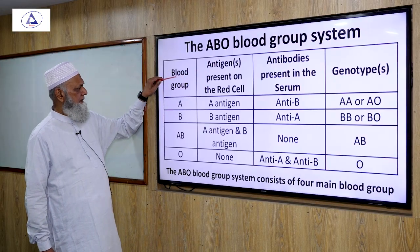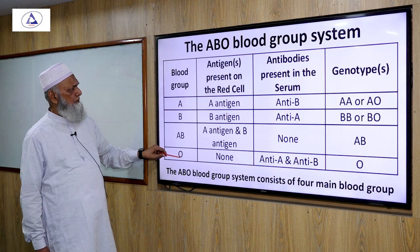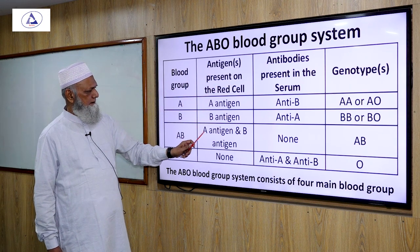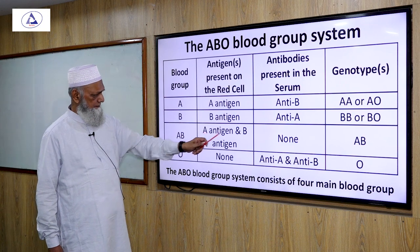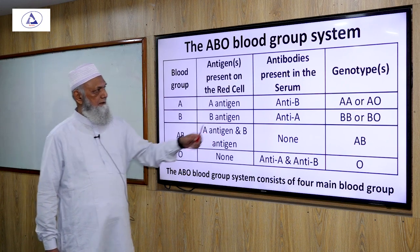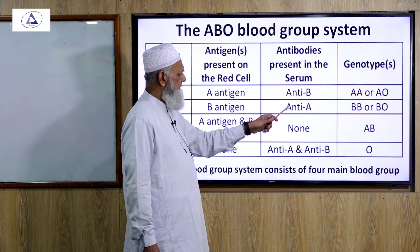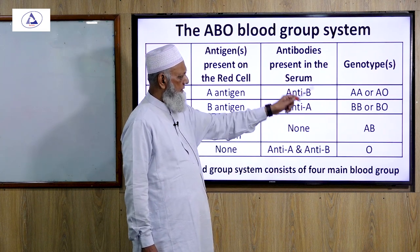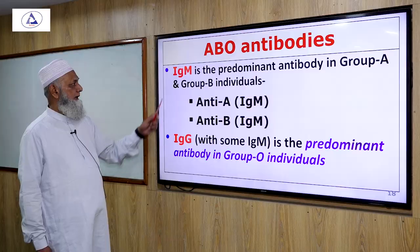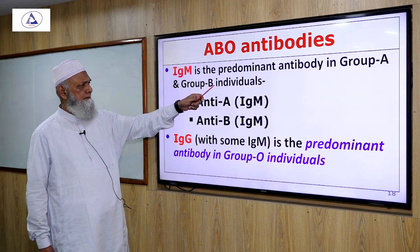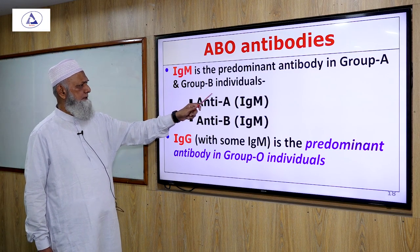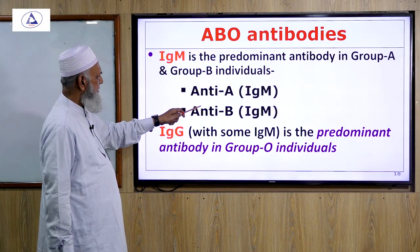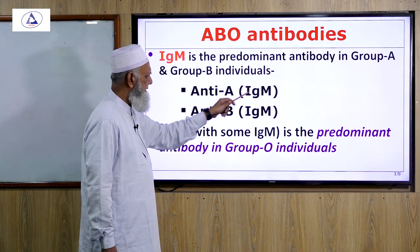The ABO blood group system includes blood groups A, B, AB, and O. Antigen present on the red cell surface: blood group A has A antigen, B has B antigen, AB has both A and B antigens, and O has none. Antibody in the serum: group A has anti-B, group B has anti-A, group AB has none, and group O has both anti-A and anti-B. There are six types of genotypes. IgM is the predominant antibody in group A individuals as anti-B, and anti-A and anti-B are IgM antibodies.